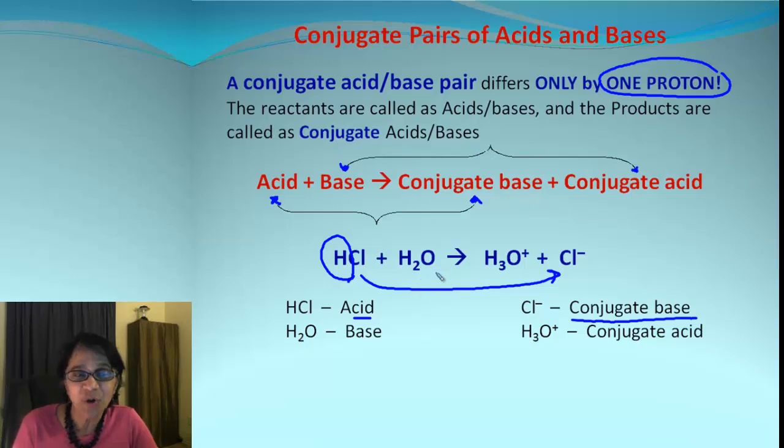And we have water. Water can actually act as acid and base and we will talk about that more in detail later. But in this case, water is gaining one proton and that forms hydronium ion. So what happens? Water is acting as base here and what we get, hydronium ion is a conjugate acid.